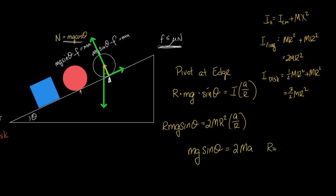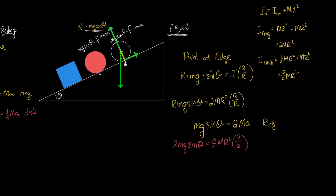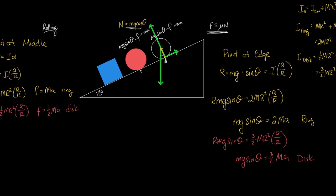Cancel out all that garbage and get M G sine theta equals 2 M A. That's a ring. How about the disc? RMG sine theta equals 3 halves MR squared times A over R. M G sine theta equals 3 halves M A. That's the disc.